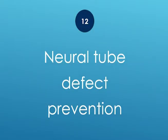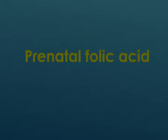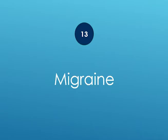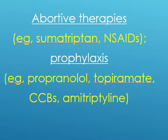Neural tube defect prevention: use perinatal folic acid, also known as vitamin B9. Migraine treatment — for abortive therapies, use sumatriptan or NSAIDs. For prophylaxis, use propranolol, topiramate, CCBs, or amitriptyline.